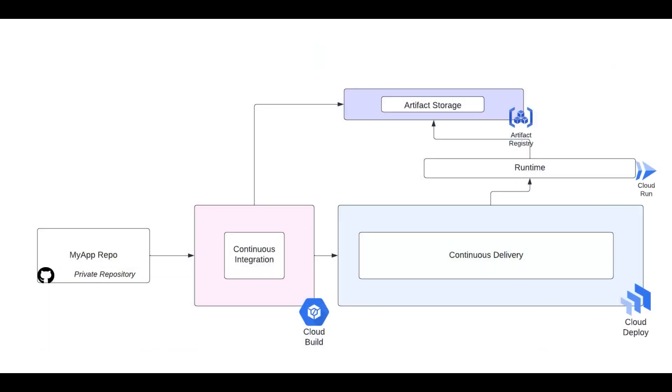So how does all of this come together? To answer this question, I'm going to turn it over to Edward, who will show us how to create a secure CI/CD pipeline for Cloud Run using Cloud Build, Artifact Registry, and Cloud Deploy. Hi everyone. Today we're going to walk through how we set up a fast, reliable, and secure CI/CD pipeline using components from Software Delivery Shield.